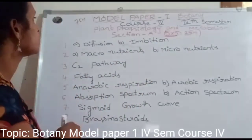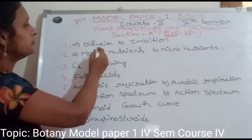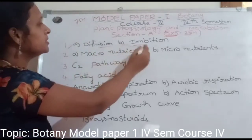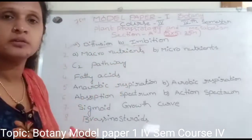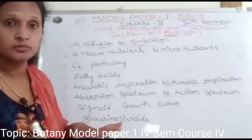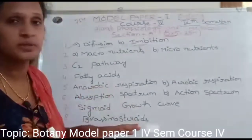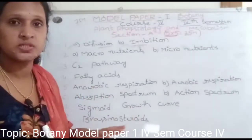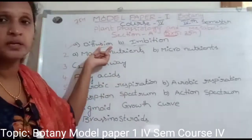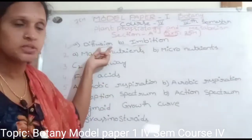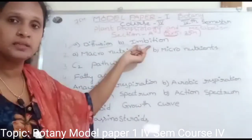First question: Diffusion and Imbibition. Diffusion means water molecules movement. We will discuss how water moves in plants — Osmosis, Diffusion, and Imbibition. We will discuss the process of diffusion, and Imbibition means the absorption process.